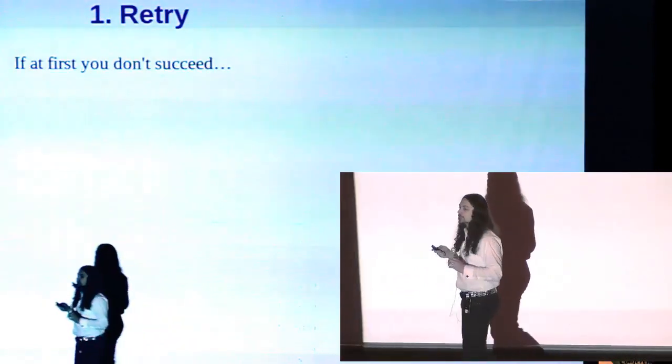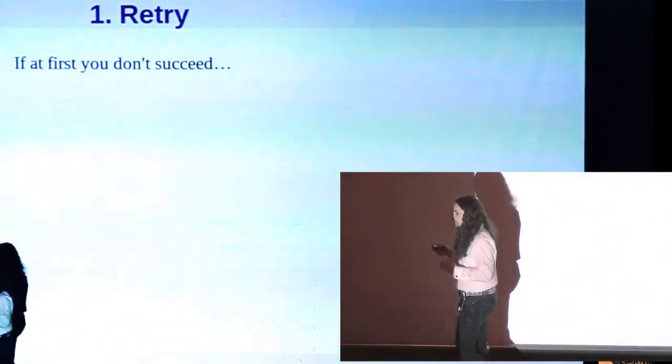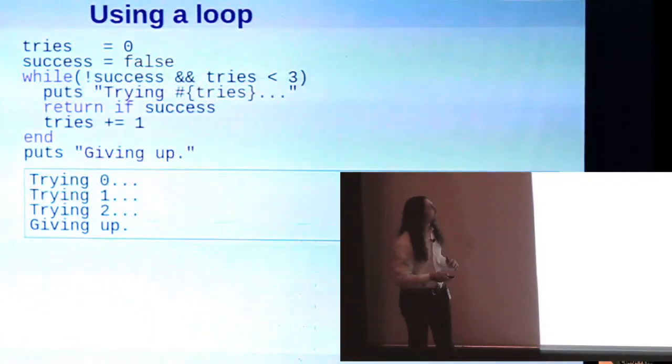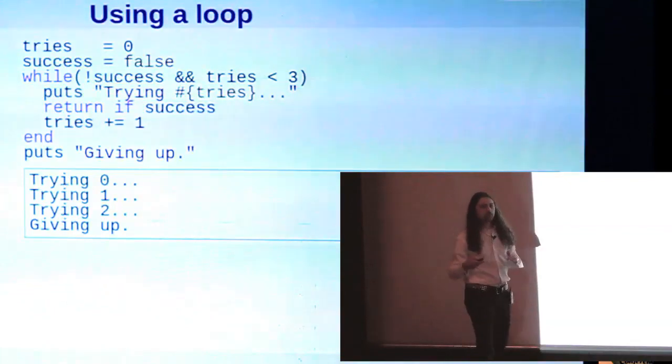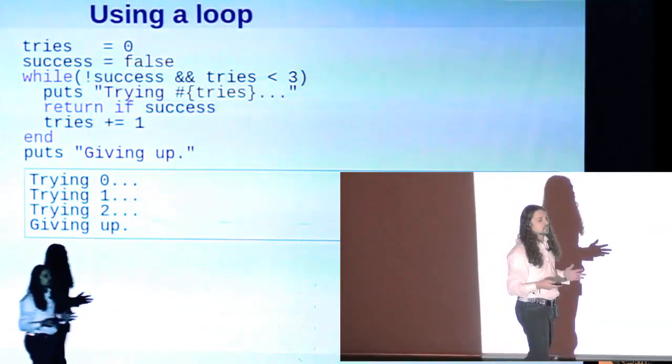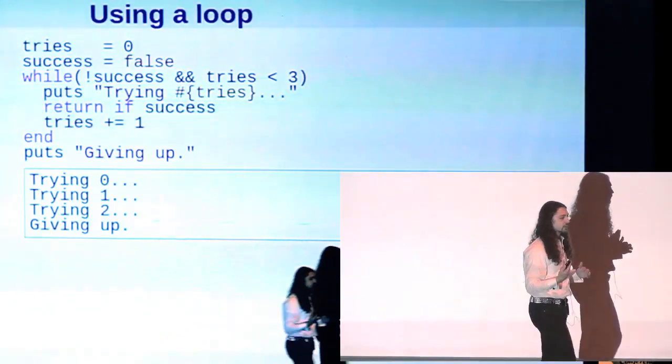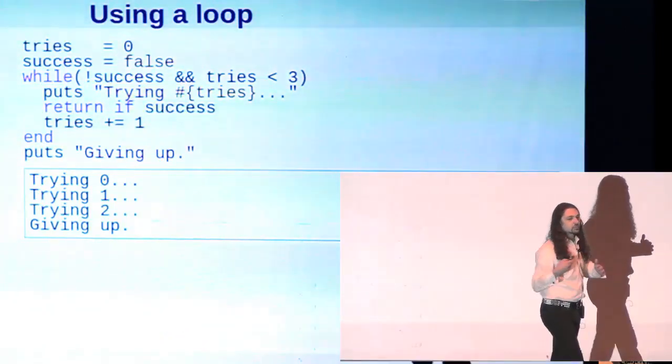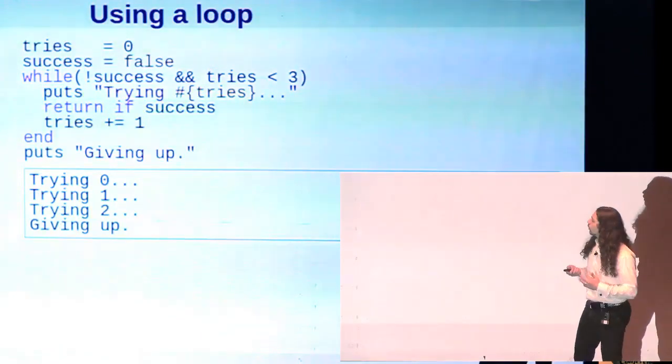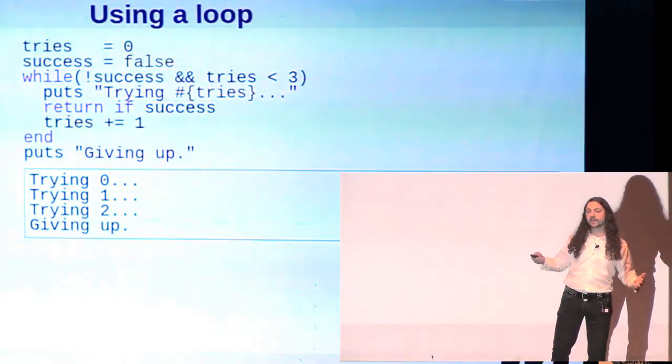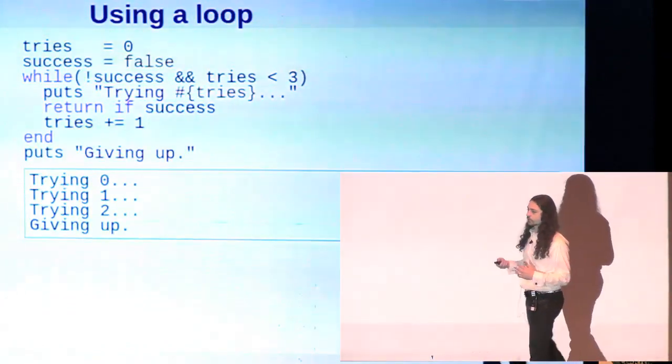Ruby is one of the few languages where the exception mechanism has a retry feature. So if you've ever had a piece of code where you need to try something over and over again, like maybe you've got a flaky web service that you're hitting or something like that, you might have written something like this. Here's a simple loop that's trying something over and over, and it has a threshold past which it's not going to try anymore, and it's just going to give up.